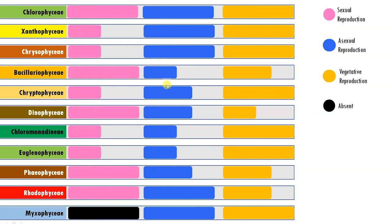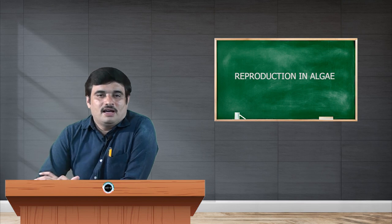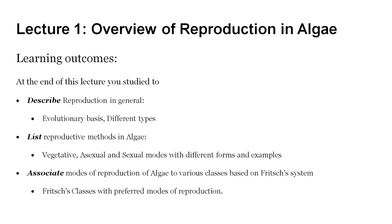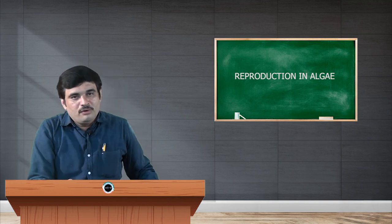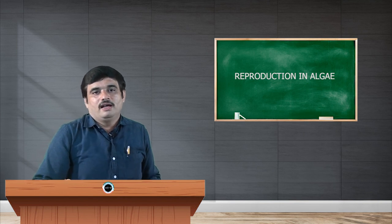With this, we have learned the following outcomes: we are able to describe reproduction in general with an evolutionary basis and different types; we were able to list reproductive methods in algae including vegetative, asexual, and sexual modes with different forms and examples; and we were also able to associate modes of reproduction in algae to various classes based on Frisch's system. The key character studied is the Frisch classes with their preferred mode of reproduction. Thank you.